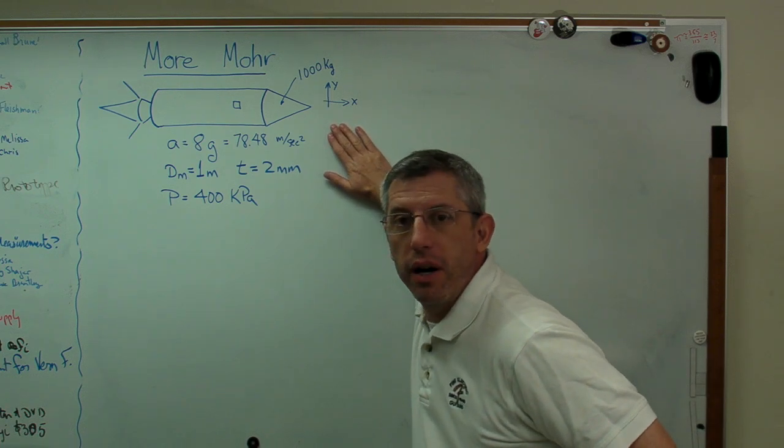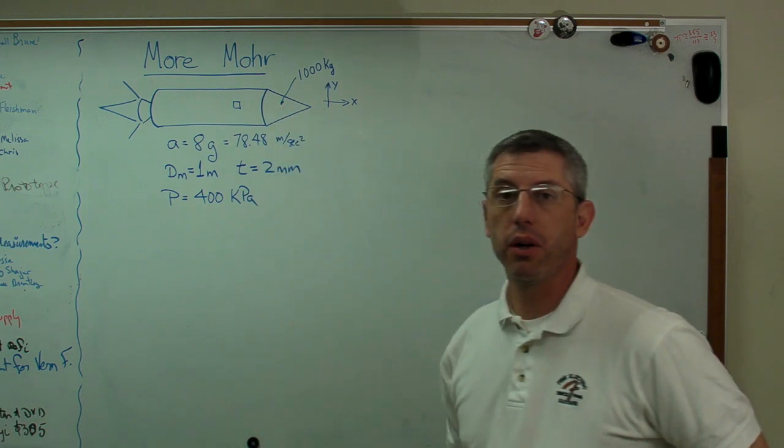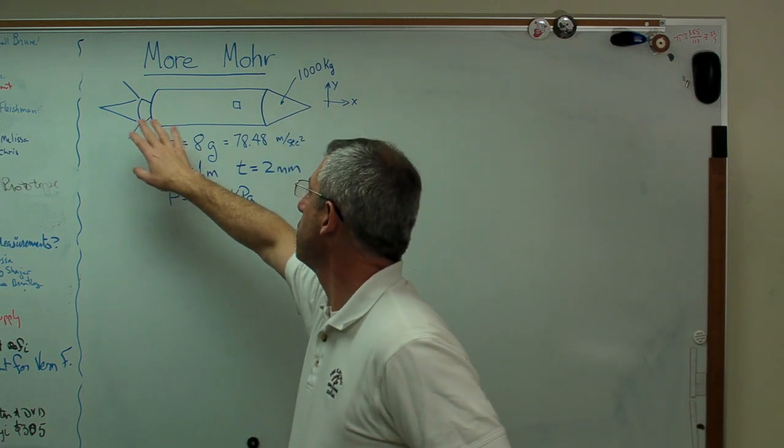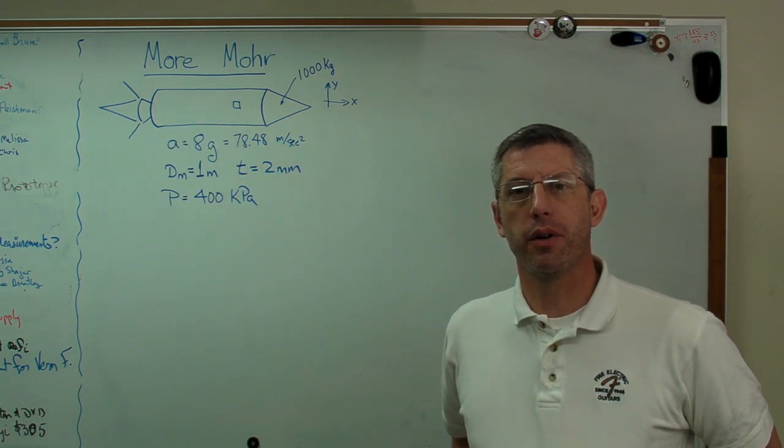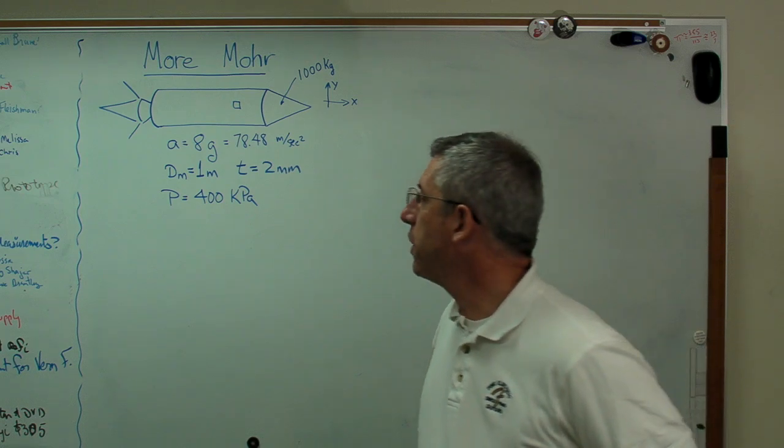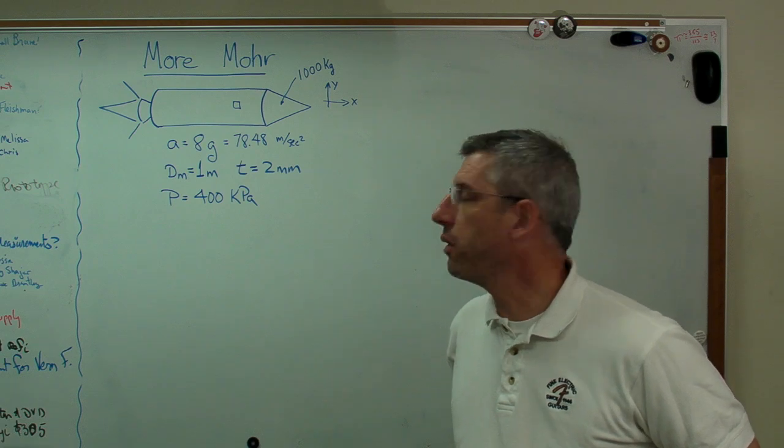What I've got here today is a rocket with a thousand kilogram payload on one end and the engine on the other end. The interior of the rocket is pressurized, and this is pretty typical. When you pressurize the fuel, it makes it easier to get it to the engine, and it also makes the structure a little bit stronger.